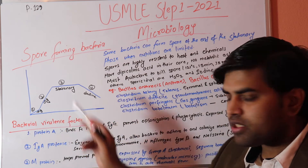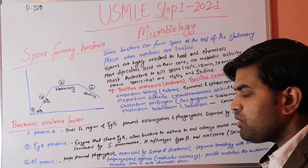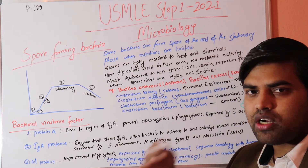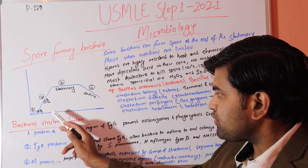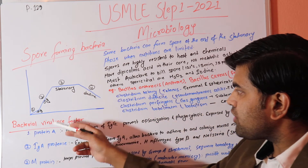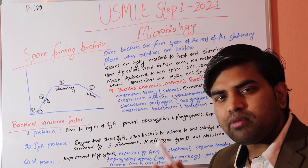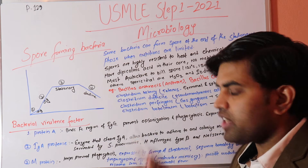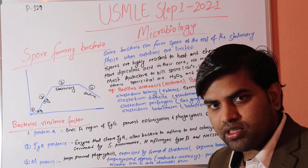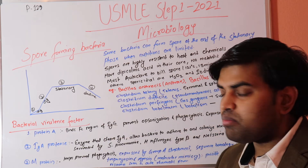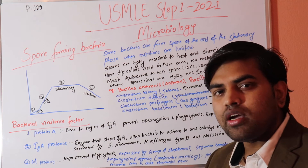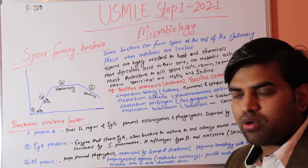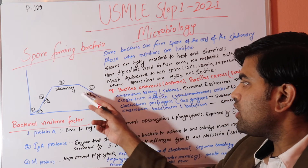Bacterial multiplication takes about 20 minutes per cycle. When grown in media, bacteria go through lag, log, stationary, and decline phases. In the log phase, bacterial count grows rapidly. In the stationary phase, multiplication and death become equal due to lack of food and resources. In the decline phase, death rate exceeds multiplication rate.